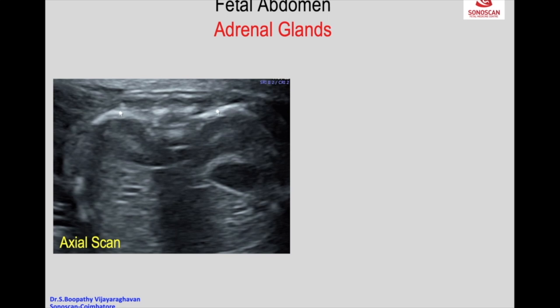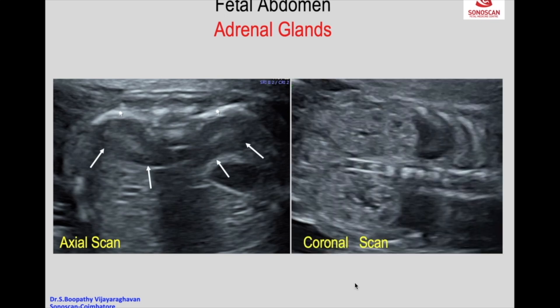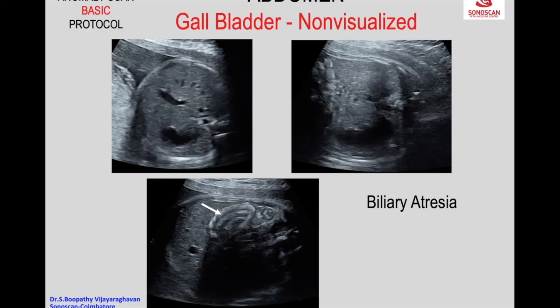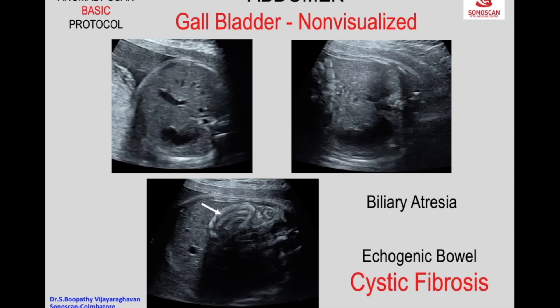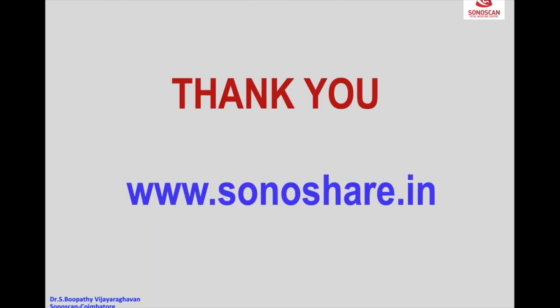The adrenal glands can also be seen. On the axial scan above the level of the kidneys, you see the stomach. Above the level of the kidneys, you see the adrenals — echo-poor oval structures on either side of the spine with a central echogenic area. In the coronal scan you see the echogenic bubble. The combination of a non-visualized or absent gallbladder with an echogenic bubble gives a very high risk for cystic fibrosis. When you see both together, invasive testing and genetic investigation to rule out cystic fibrosis must be done. This was a case of non-visualized gallbladder with echogenic bubble which turned out to be cystic fibrosis on genetic testing. Thank you for your attention.